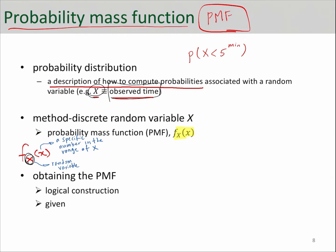This f_X at point x is the same as probability of random variable X being equal to this little x. For example, probability of X being equal to five minutes is the same as saying f_X at five.